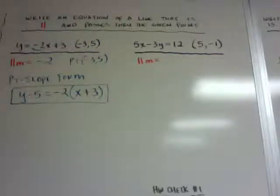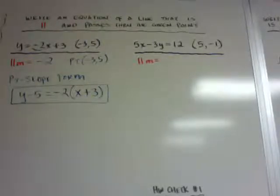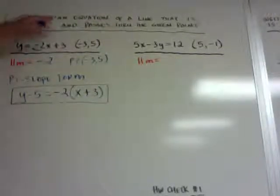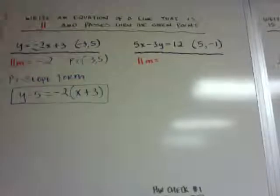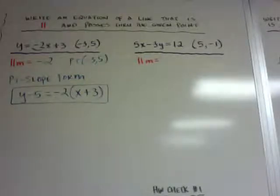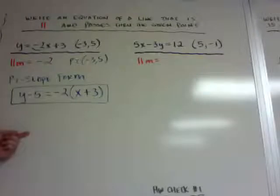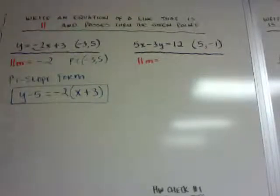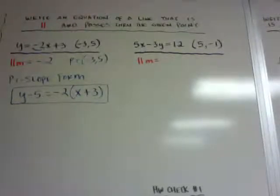The book sometimes changes it to slope-intercept form, but you don't have to. If it says write an equation, you can choose any one of the three forms: point-slope, slope-intercept, or standard. I would stop at point-slope — why do extra work, and why give yourself a chance of making a mistake?